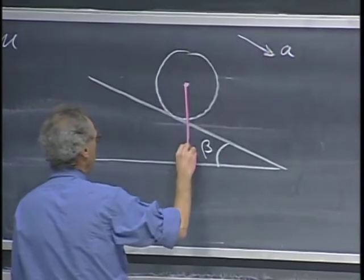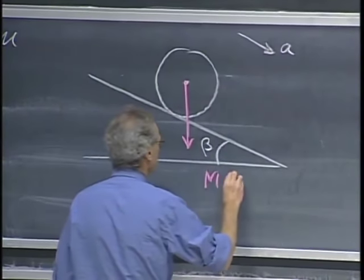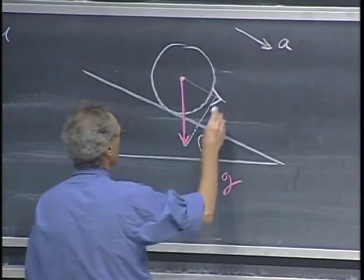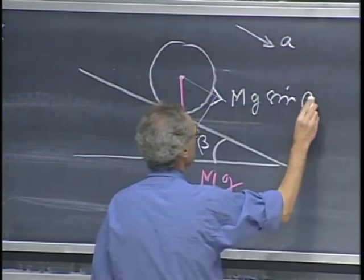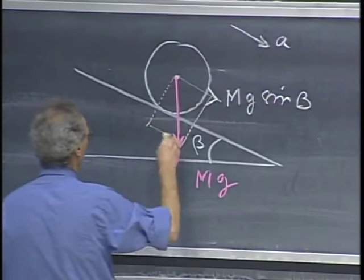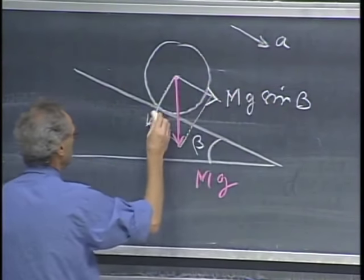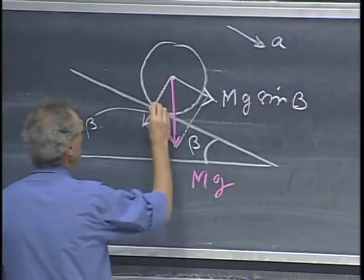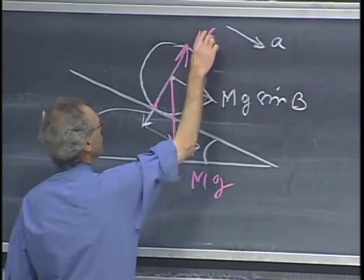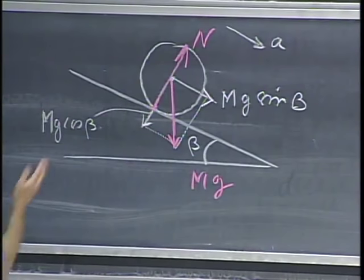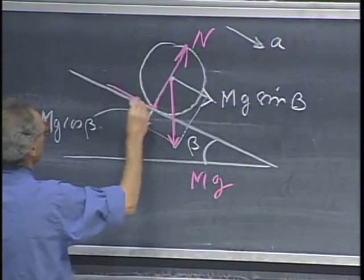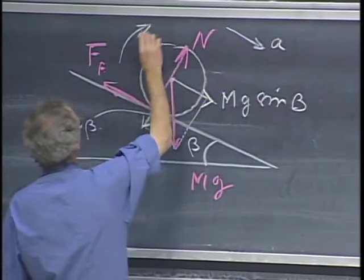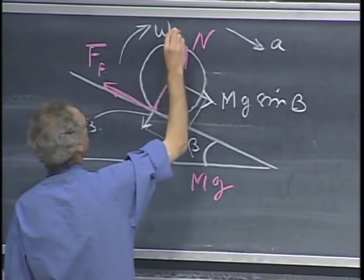Let's put all the forces on this object. This one is mg. We decompose that into one along the slope, which is mg·sin(β), and one perpendicular to the slope, which equals mg·cos(β). We've done that a zillion times. There is a normal force here, and its magnitude is mg·cos(β), so there is no acceleration in this perpendicular direction. And then there is a frictional force f_f. There is an angular velocity at any moment in time, ω, which will change with time, and the center point Q, which is the center of mass, is going to get a velocity v that also changes with time.